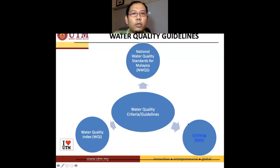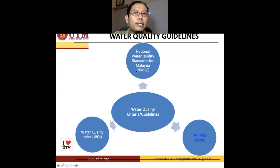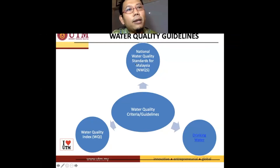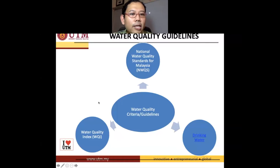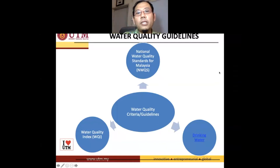We talked about water quality guidelines. There are three things you need to know. The first is the National Water Quality Standards for Malaysia, or NWQS. Initially it was called the Interim National Water Quality Standard for Malaysia, INWQS. It was in interim state for a very long time, but in 2019 it was officially launched. Another thing is the Water Quality Index — how you calculate water quality — and the last part is the drinking water standard.